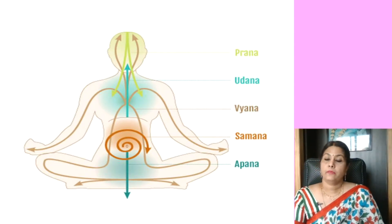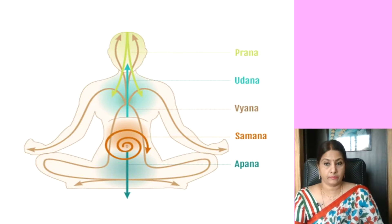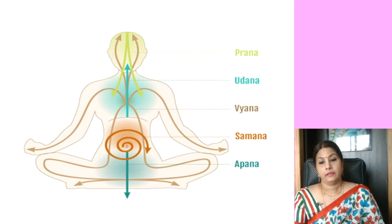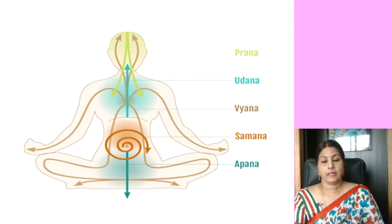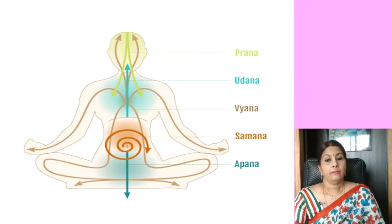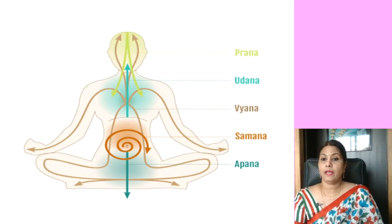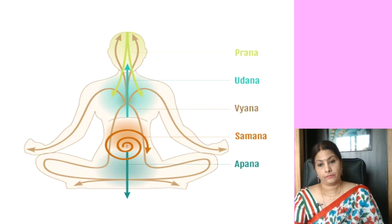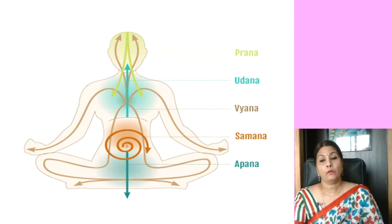The Pranamaya kosha consists of the nadis — energy pathways through which the vayus flow. There are about 72,000 nadis in our body. Then the chakras, the dalas (the petals of the chakras), and the breathing patterns — they are all part of the Pranamaya kosha. The Pranamaya kosha can be influenced by the physical body through the breathing pattern. That is why breathing practices are very important for a yogi. A yogi is a person who can experience the pranic force flowing through the nadi system.